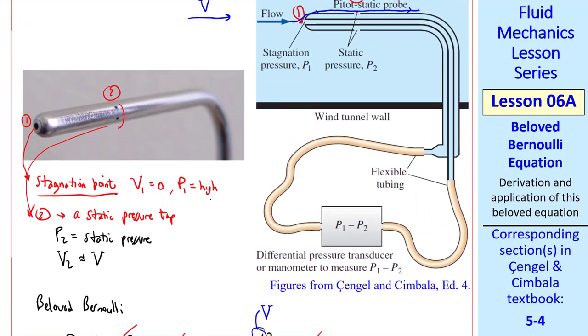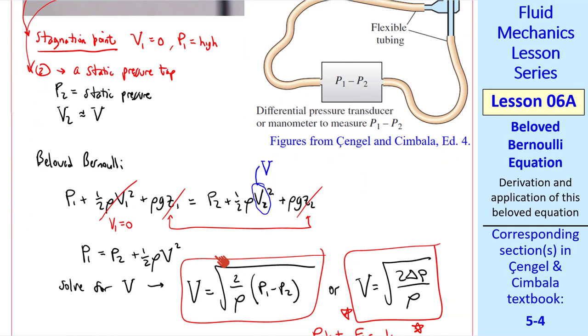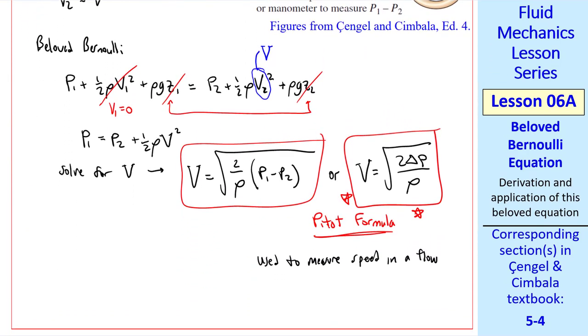Keep in mind that you have to align this probe with the flow, in other words, parallel to the flow. So this is especially useful in situations where you know the direction of the flow, for example, in a wind tunnel.